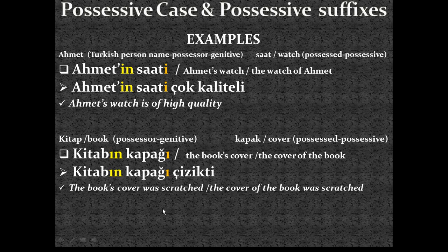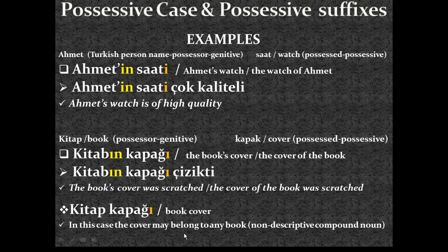Example sentence: 'Kitabın kapağı çizikti' — the book's cover was scratched. Now, without possessor suffix added to the possessor but possessive suffix still in place — watch the translation difference. 'Kitabın kapağı' is 'the book's cover', but 'kitap kapağı' is just 'book cover'. That means in this case the cover may belong to any book. This is called a non-descriptive compound noun. When we don't apply the possessor suffix, that translates as 'book cover' — it refers to any book in general, not a specific book.